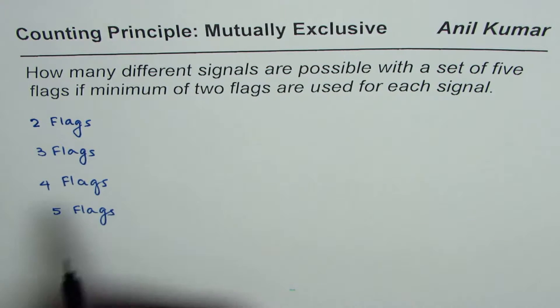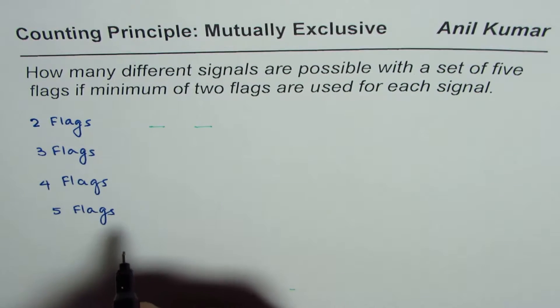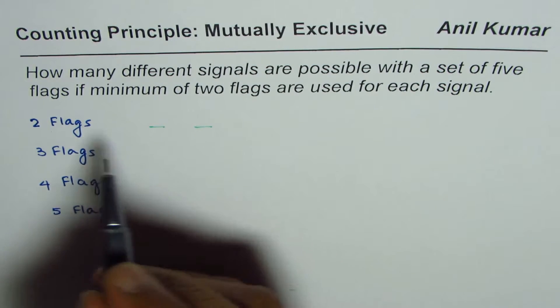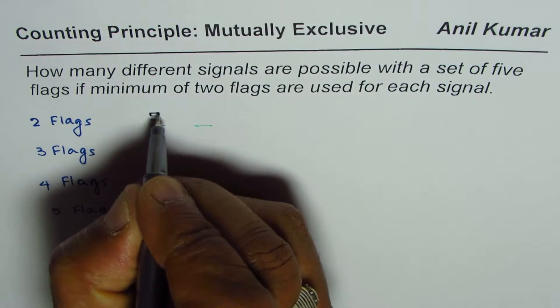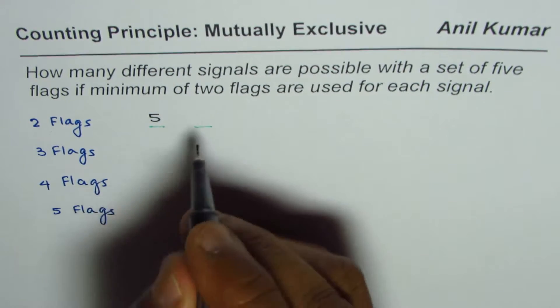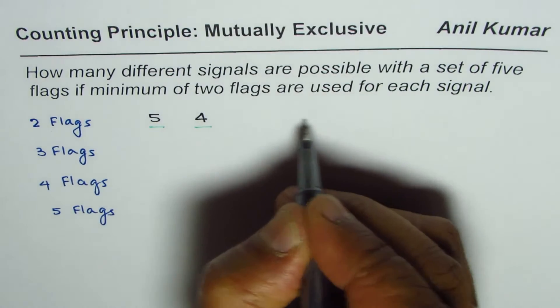So if you have two flags, in that case from the five flags we have the option to select any one of those five flags, and once you select one you're left with four. So those are the number of options, and that gives you five times four as twenty.